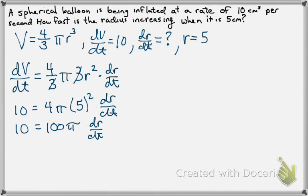And to finish, all we have to do is divide. So we get 10 over 100 pi. Or, that'll simplify down to 1 over 10 pi. And that's for our dr/dt.